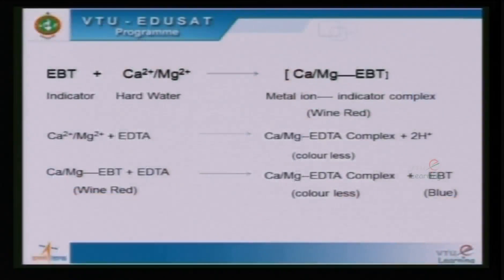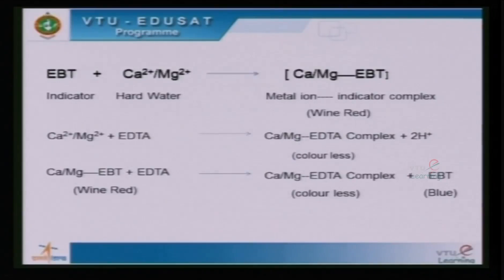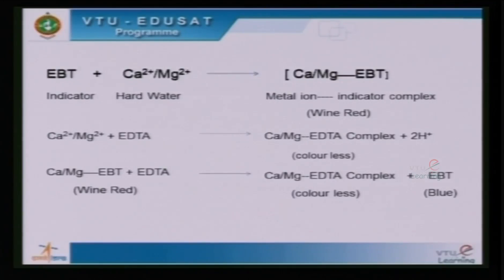The reactions involved in the experiment: when the indicator is added to hard water, firstly the calcium and magnesium ions react with the indicator, forming the metal-indicator complex, which is wine red in colour. When the wine red solution is titrated against EDTA, EDTA forms a complex with the free calcium and magnesium ions, which is a colourless complex, releasing H+ ions. The formation of H+ ions will bring down the pH of the solution; therefore, the pH is maintained by adding the buffer solution.